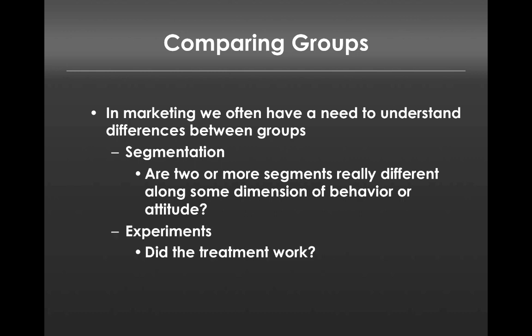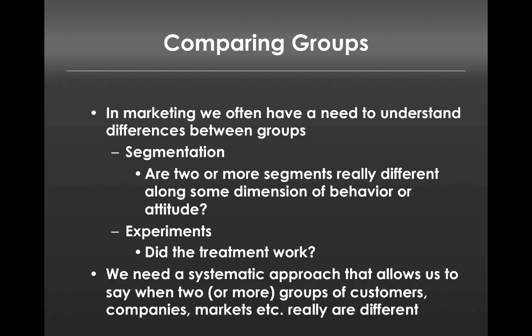Similarly, we have to look at experiments. When we test condition A against condition B, we want to know if those are different — we want to know if the treatment worked. So what we need is a systematic approach that allows us to say when two or more groups of customers, companies, markets, etc. really are different from one another. We do that with t-tests.